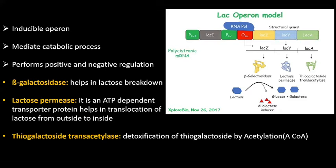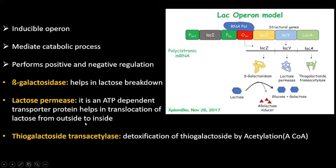The lac operon consists of a promoter, which is the minus-10 to minus-35 region upstream of the operator. It also contains three genes: LAC-Z, LAC-Y, and LAC-A. LAC-Z encodes beta-galactosidase, which helps in lactose breakdown into glucose and galactose. LAC-Y encodes lactose permease, an ATP-dependent transmembrane protein that helps in the translocation of lactose from outside to inside the cell. LAC-A encodes thiogalactoside transacetylase, which helps in the detoxification of thiogalactoside by acetyl coenzyme.